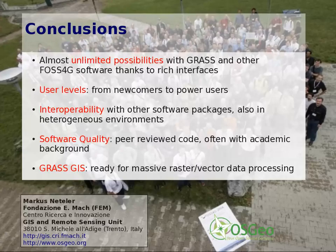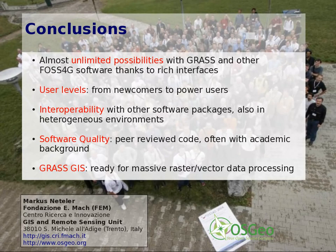To conclude, there are almost unlimited possibilities with GRASS and related OSGeo software thanks to rich interfaces — rich interfaces in terms of data exchange, import and export of different formats, and user interfaces. Open source GIS software addresses different user levels from newcomers to power users. For heterogeneous environments with proprietary software, interoperability is very important. Many projects rely on interoperability libraries that are also used in proprietary software, ensuring that data exchange is easy and straightforward. In terms of software quality, the source code is peer-reviewed, following the academic model of scientific publication.